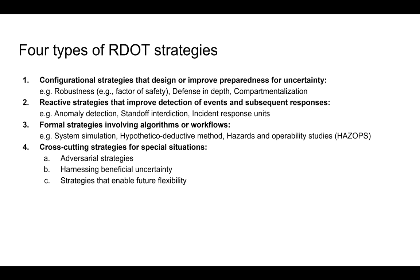Lastly, there are cross-cutting strategies. Some are specifically useful in adversarial settings — when you have an enemy in a military context or a cybersecurity threat. There are strategies useful for harnessing beneficial uncertainty, the most common example being marketing, where you send out a campaign and try to maximize conversion rate. And lastly, there are meta-strategies that enable future options, such as basic research, which usually does not give you a solution directly but can enable new technologies in the future.